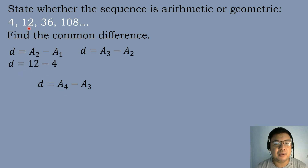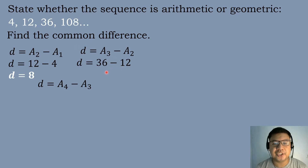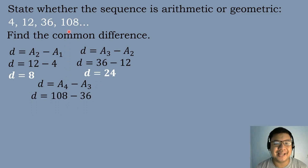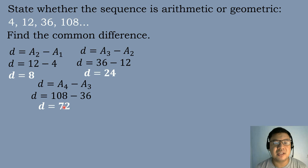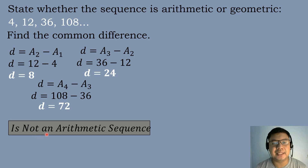The second term is 12 minus the first term 4 equals 8. The third term is 36 minus the second term 12 equals 24. The fourth term is 108 minus the third term 36 equals 72. As you can see, the value of D is different with each equation. Therefore, the sequence 4, 12, 36, and 108 is not an arithmetic sequence.